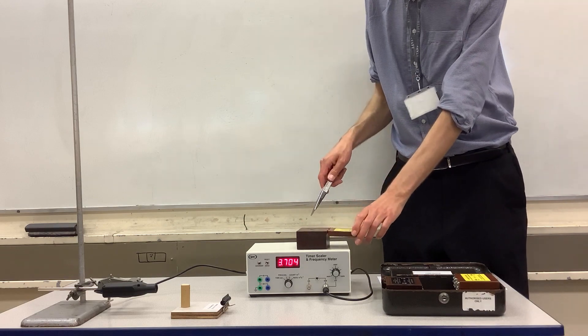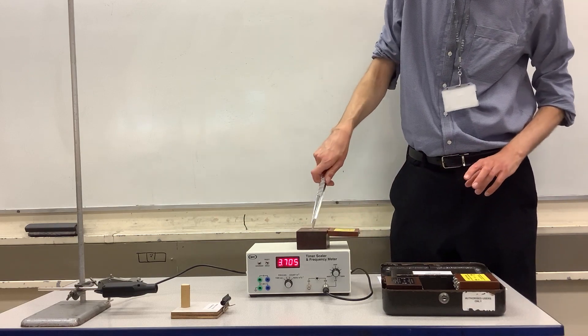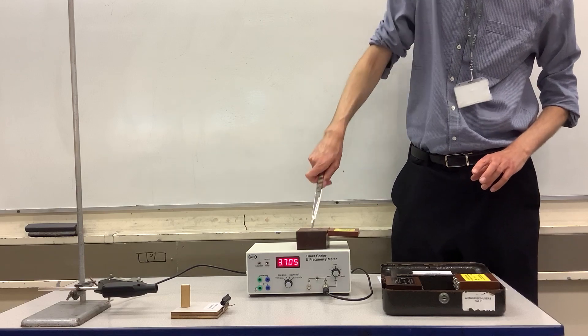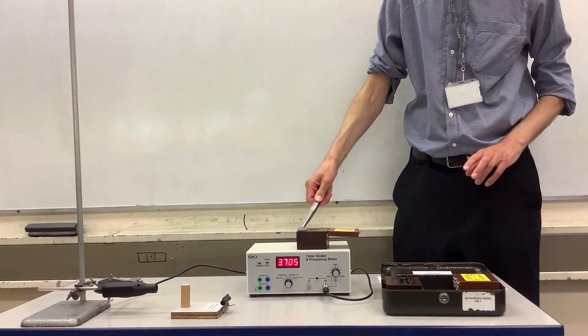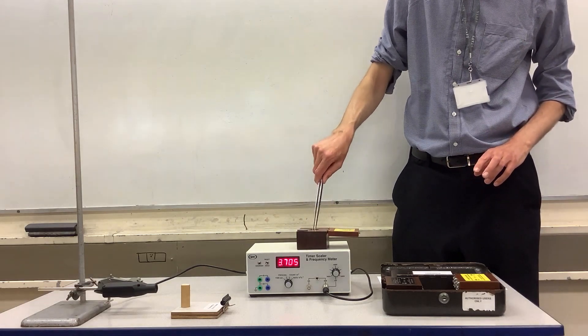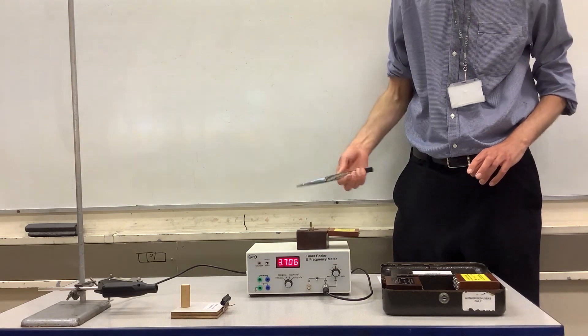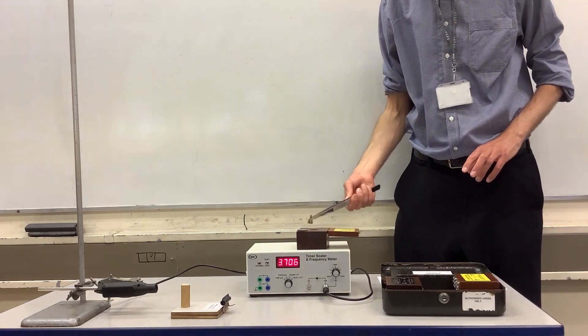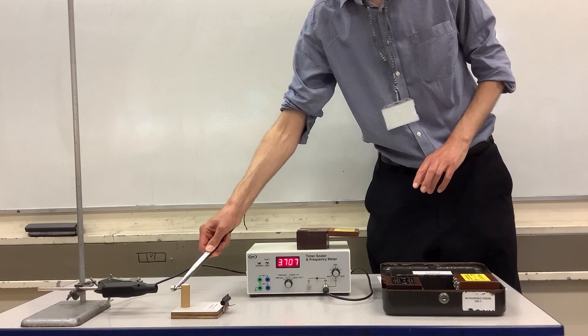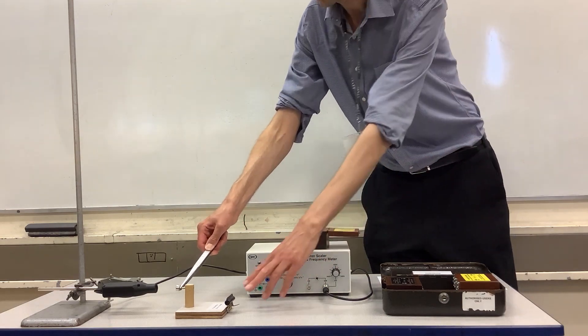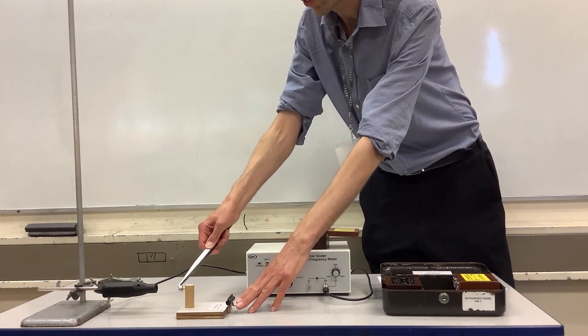Like all our radioactive sources, they're stored in a lead-lined box, and we're going to use tongs to take them out so that my hands don't get too close to the radioactive source. So this is mostly the holder, and then there is a very small amount of the radioactive source inside.